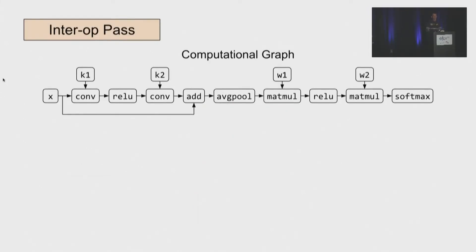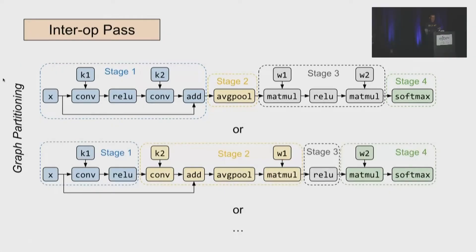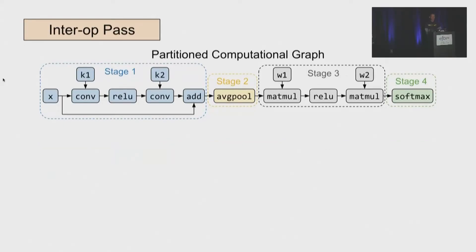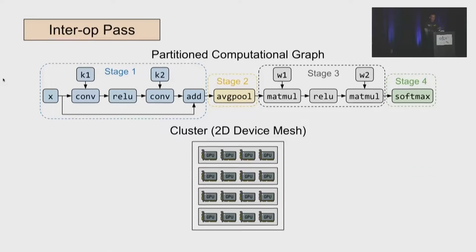So let's walk through an example and show what each pass does. So for inter-operator pass with a given computational graph, we need to partition the graph into multiple stages to form a pipeline. And there are different ways to partition the graph and we need to select the best of them. So even if we pick how to partition a graph, we still need to assign each pipeline stage devices to execute the stage.